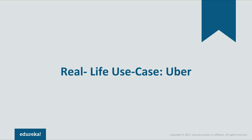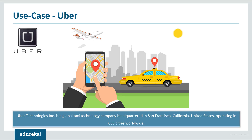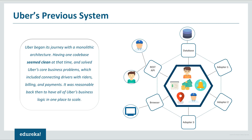Let's look at a real-life use case of Uber. Uber Technologies is a global taxi technology company headquartered in San Francisco, United States, operating in 633 cities worldwide. Like many other startups, Uber also started with a monolithic architecture for a single city. Initially, they had a REST API connecting passengers and drivers — the mobile API was connected to the REST API, which was then connected to the monolithic architecture as a backend server. People accessing through web UI were also connected to the same server. There were also three adapters performing functionalities such as notifications, sending mails or messages, billing, payment, etc.